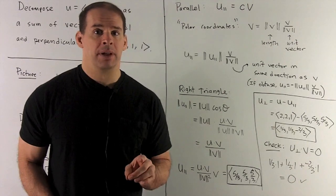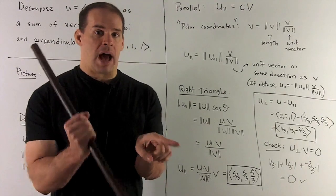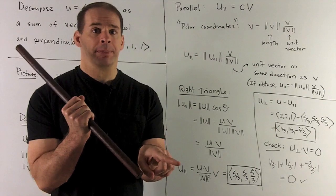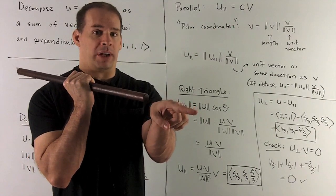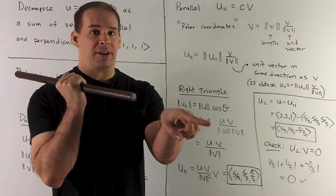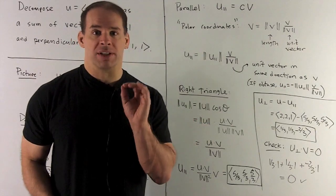If the scalar multiple is negative, then we're going to have an obtuse angle between u and v. The parallel and v are going to point in opposite directions, they may have different lengths, but they will live on the same line.